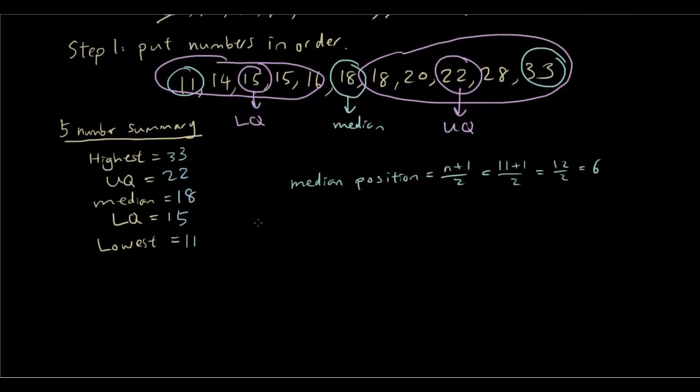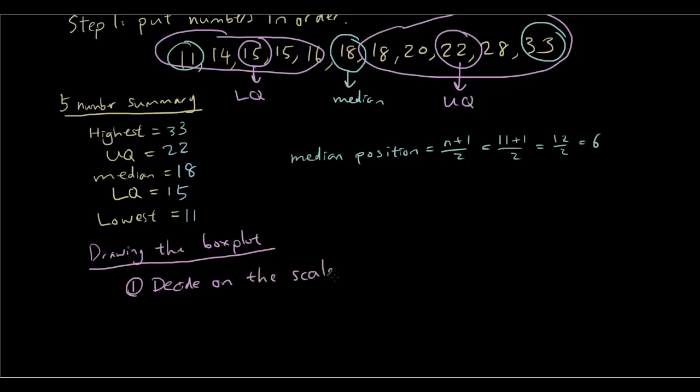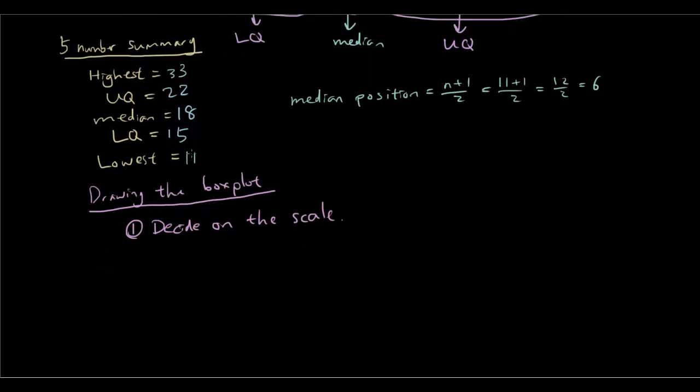And now to draw the box plot. The box plot is basically just the graphical representation of our five number summary. So the first thing you want to do when drawing a box plot is decide on the scale. And you can see that our smallest number is 11 and our biggest number is 33. So for my scale I'm going to make it start on 0 and go up to 40. So we got 10, 20, 30, 40.